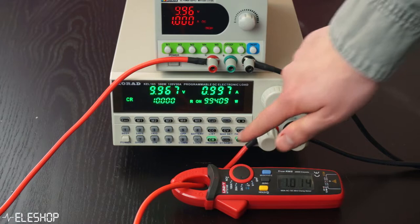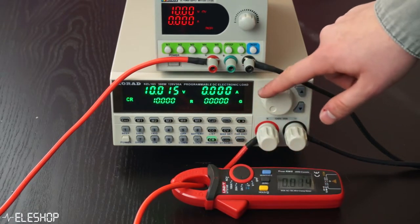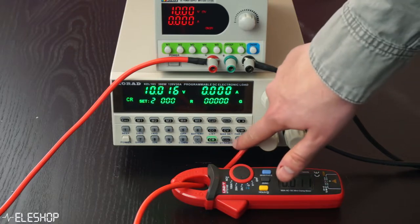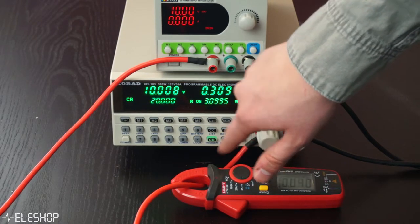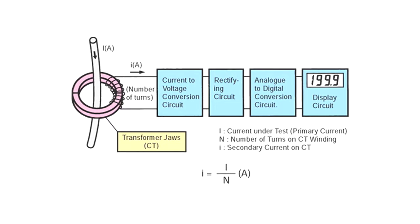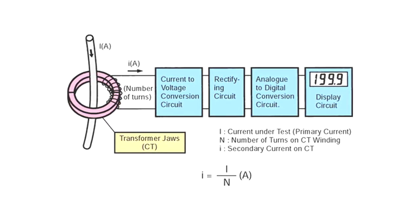Current clamps have an accuracy of plus minus 1 or 2% while digital multimeters have an accuracy of plus minus 0.5% or lower. So current clamps are not advised for very precise measurements. The method of measuring alternating current is different compared to measuring direct current.